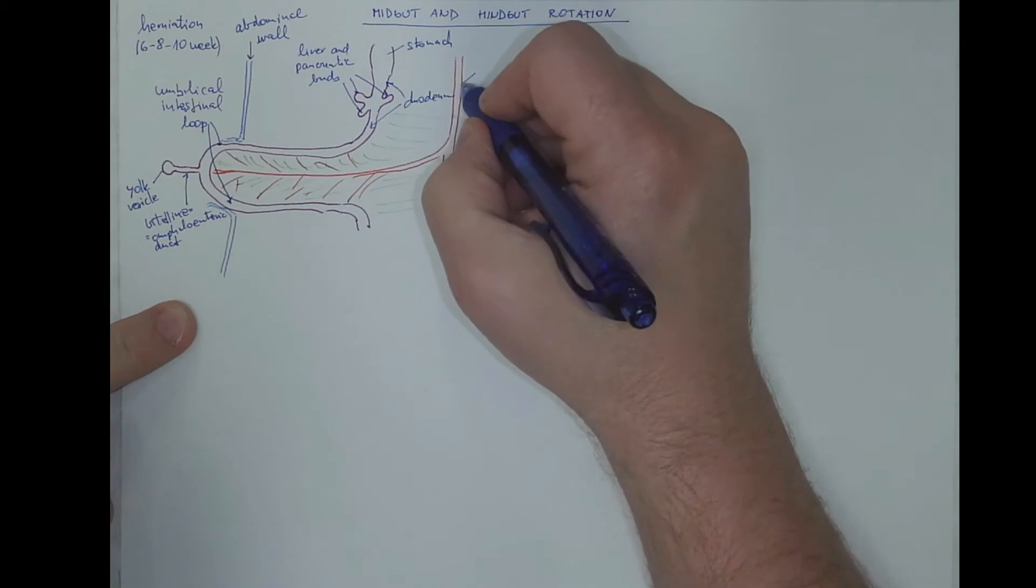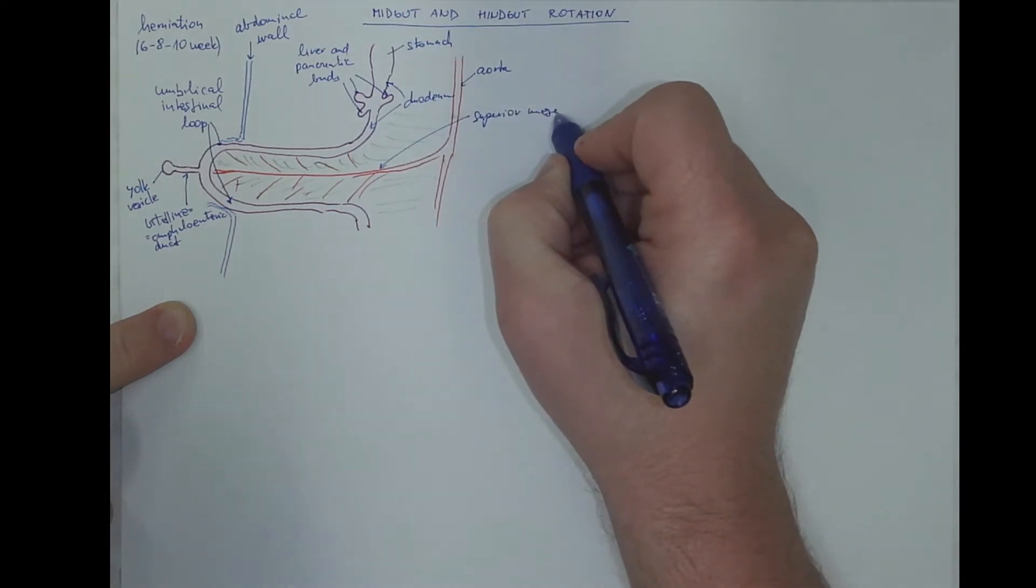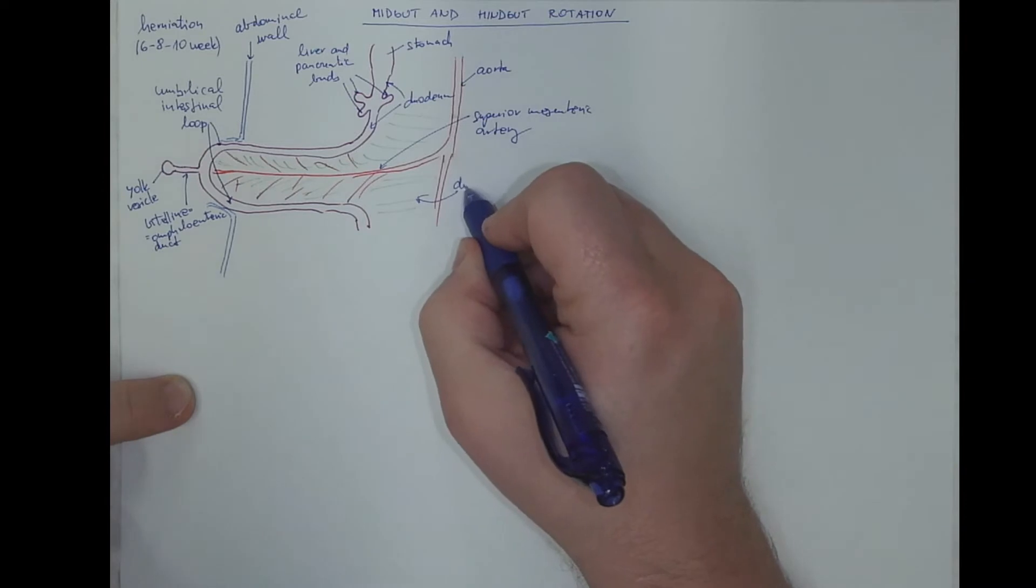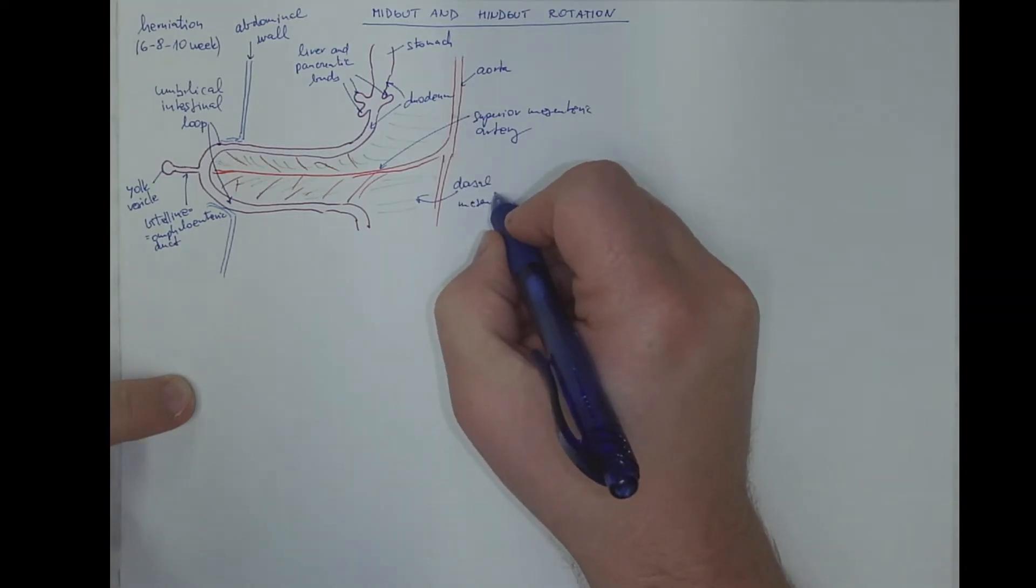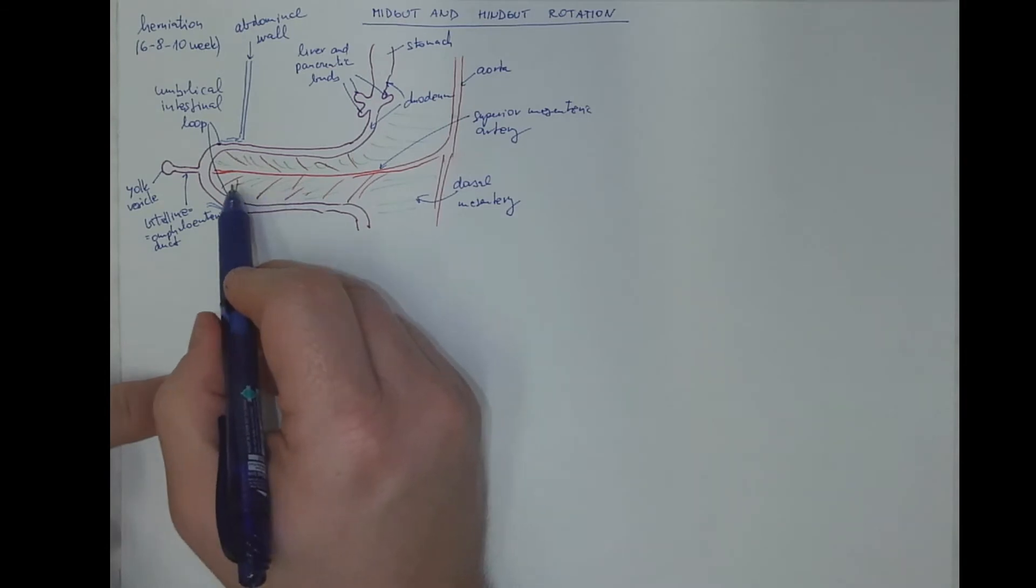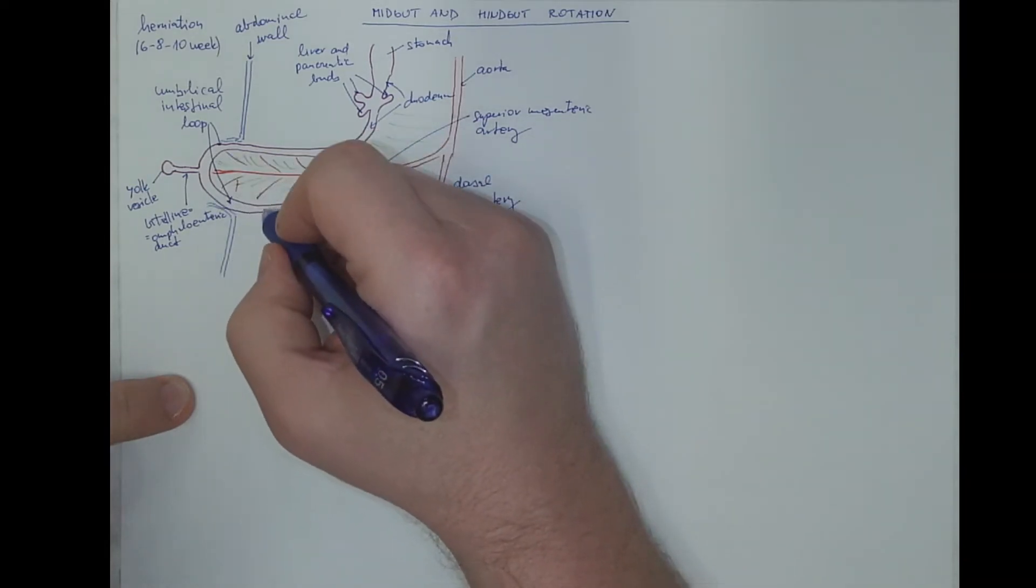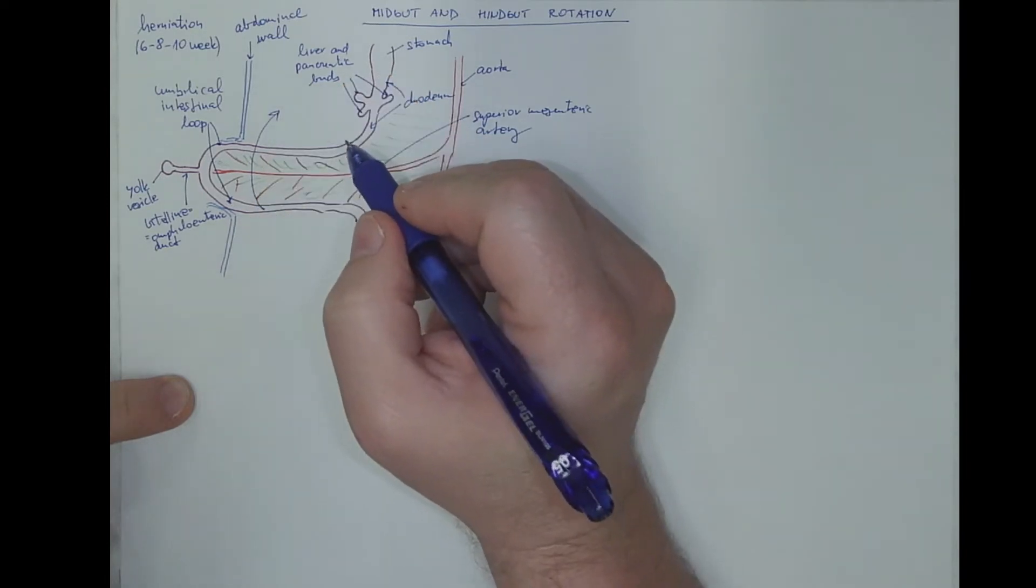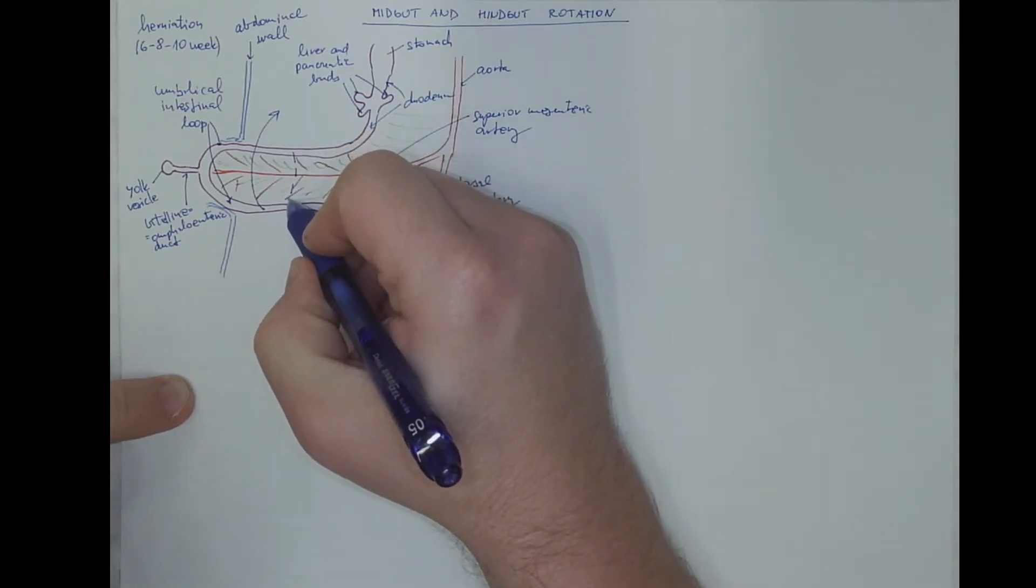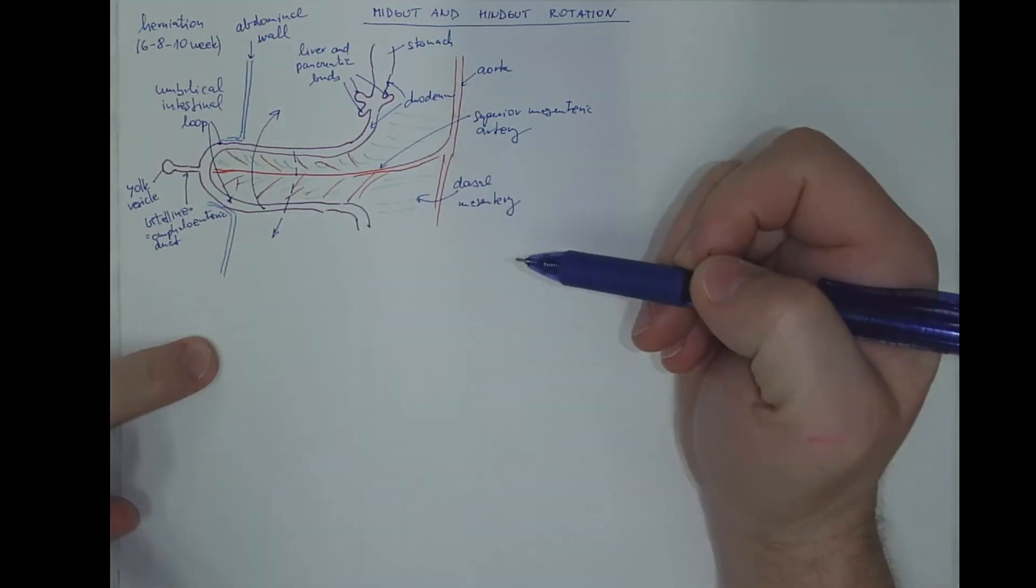This is the aorta and the superior mesenteric artery. This is the dorsal mesentery here. Now this superior mesenteric artery becomes an axis of the rotation of that loop. The posterior limb goes upwards, or the aboral limb goes upwards, and the more cranial oral limb goes downwards. So it makes this rotation with the mesenteric artery as the axis.